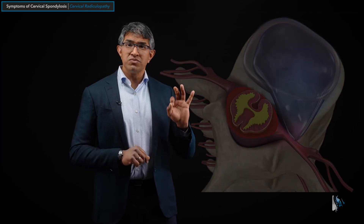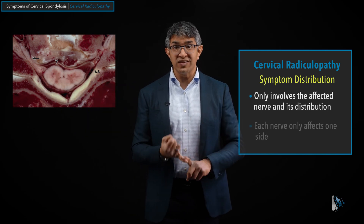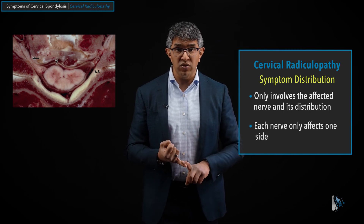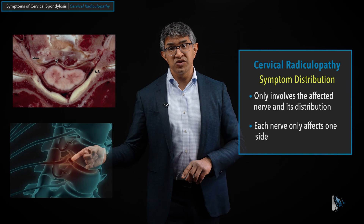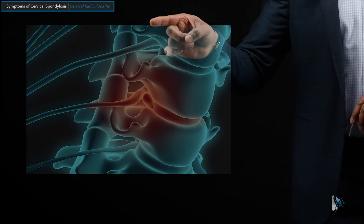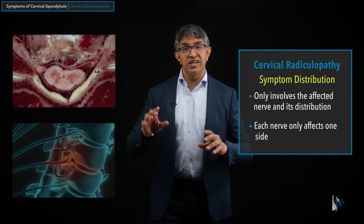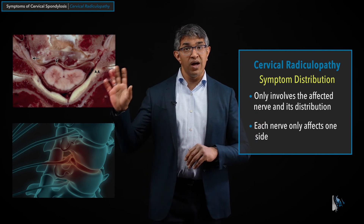In terms of the symptom distribution, there is pressure on the nerve on one side, and that pressure affects that nerve alone. Cervical radiculopathy typically affects only the structures innervated by that nerve — usually on one side, so the symptoms are unilateral. For example, inflammation at the C5 nerve will not affect C4 or C6. The symptom distribution usually only affects all of the structures where that nerve goes on that side.